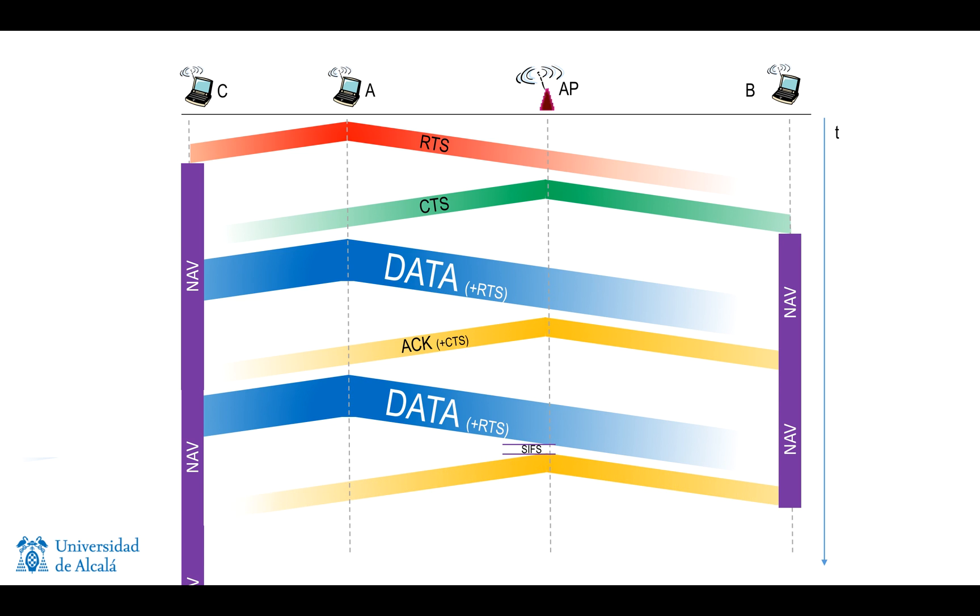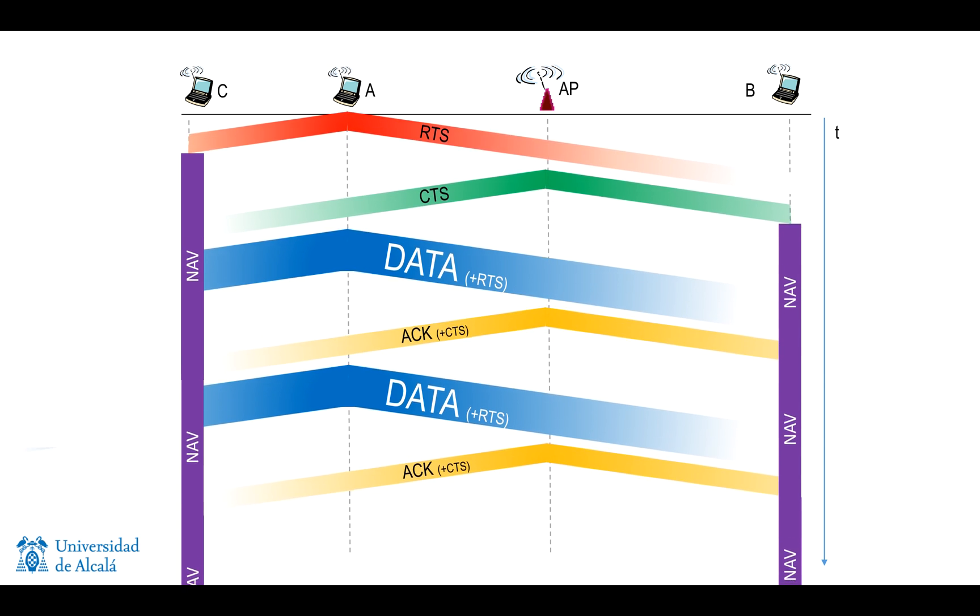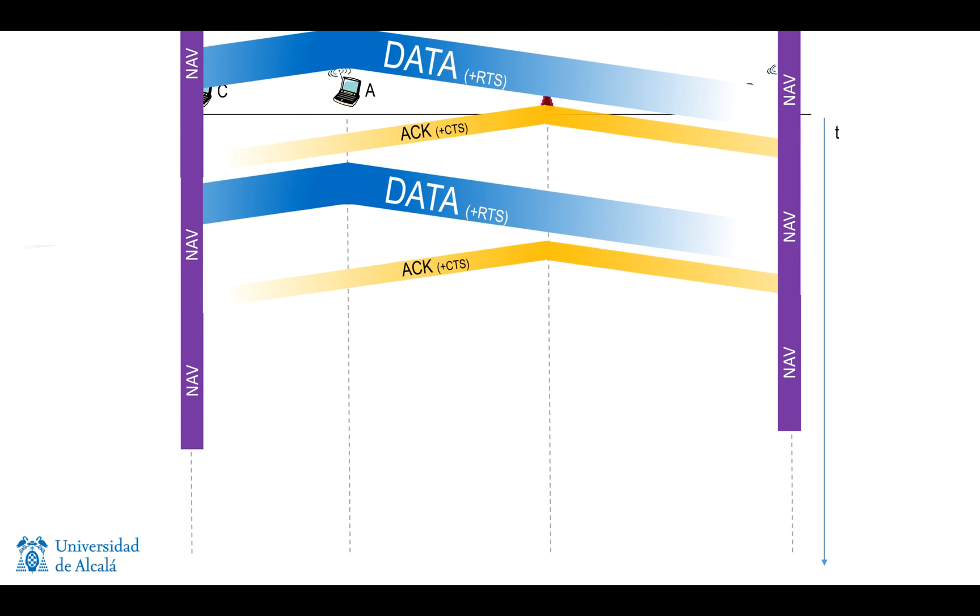After a short time, the access point sends an ACK with implicit CTS, which also causes B to continue the inhibition.